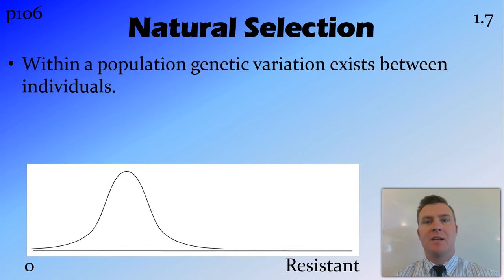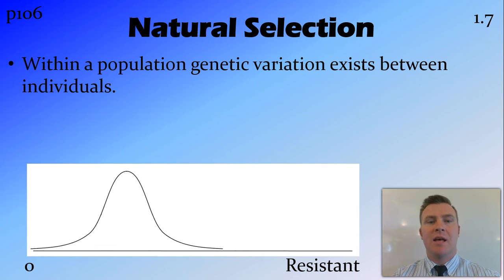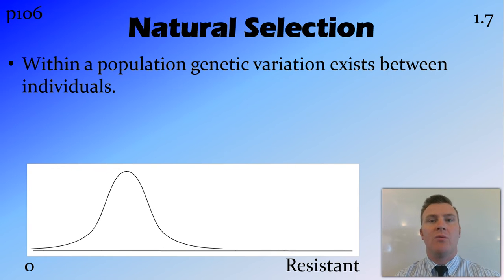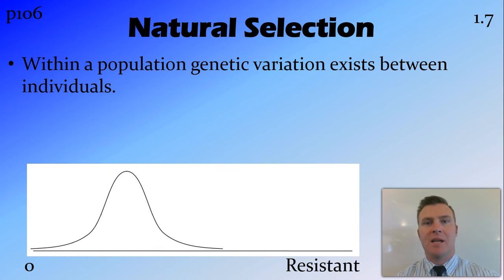Natural selection is the mechanism that we have to explain evolution. The first step is that within a population there is genetic variation. This exists due to sexual reproduction, resulting in slightly different genes throughout the population, so no organism is the same as any other organism.